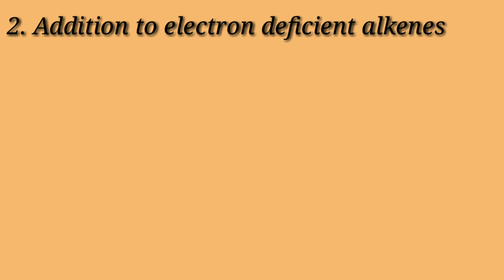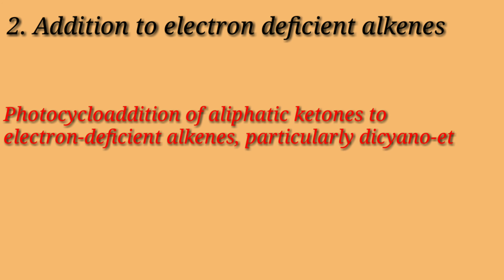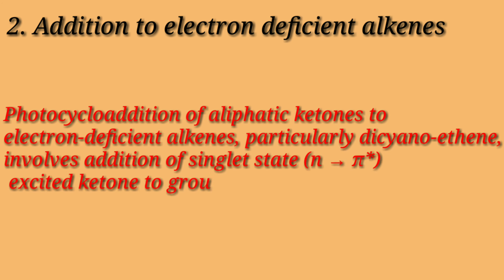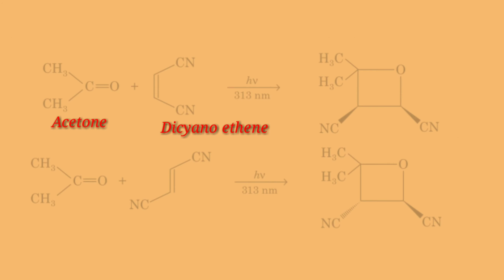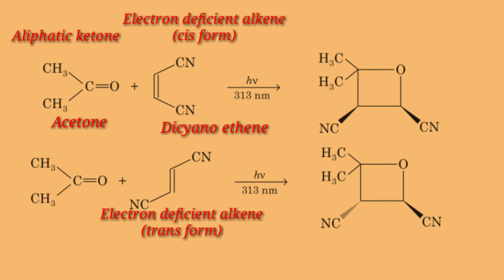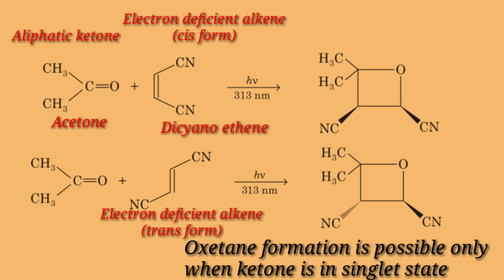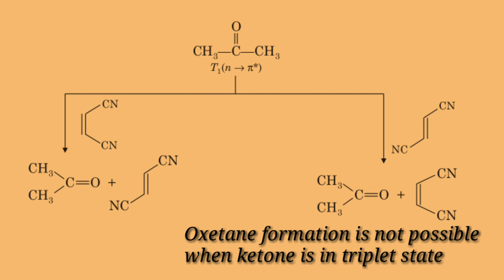The second category is addition to electron-deficient alkenes. Photocycloaddition of aliphatic ketones to electron-deficient alkenes, particularly dicyanoethylene, involves addition of the singlet n→π* excited ketone to the ground state alkene. The reaction is stereospecific and the stereochemistry of the alkene is retained in the product, i.e. the oxetane. In this case, oxetanes are formed only from the singlet n→π* state, while the triplet n→π* state does not lead to oxetane.